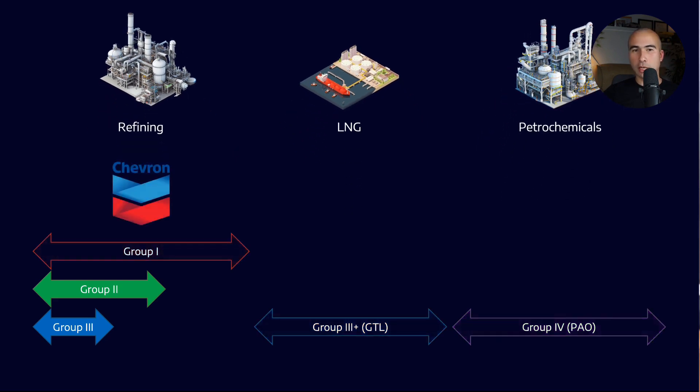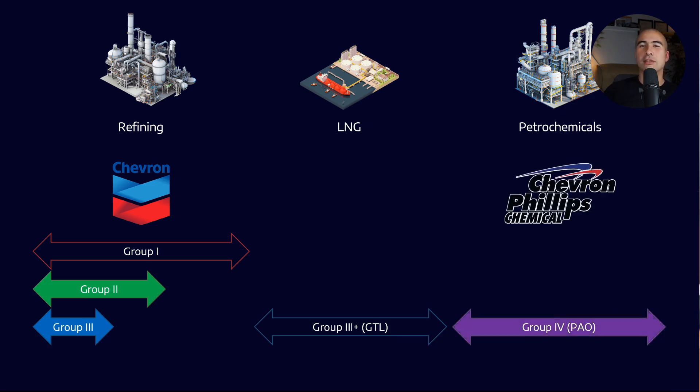So take Chevron, for example. Chevron has a family of both Group 2 and Group 3 base stocks. Now, they would argue Group 2 plus, Group 3 plus, but I'm not going to split hairs here. Now, you might think, well, hold up. I know that Chevron has synthetic base stocks. They sell PAOs. They kind of do, but it's Chevron Phillips chemical, right? They're the ones that are actually selling the PAO.